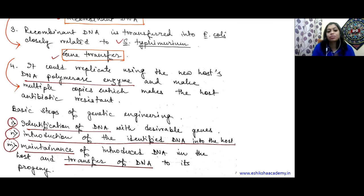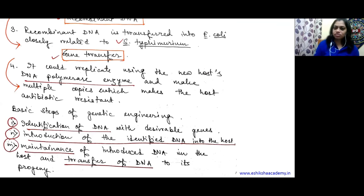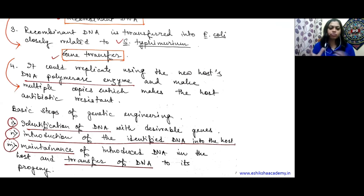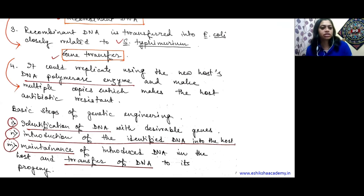Here comes the concept of gene transfer. So first is recombinant DNA, second is gene cloning - we make multiple copies of our recombinant DNA before transferring it for future use - and third is gene transfer, where we put the recombinant DNA into the new host E. coli.